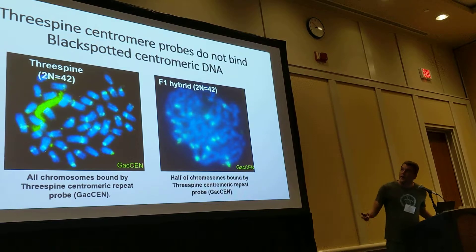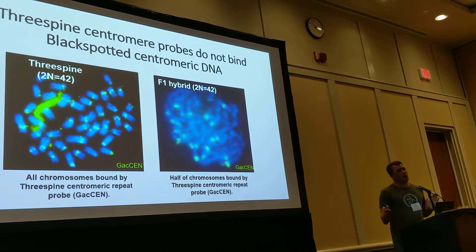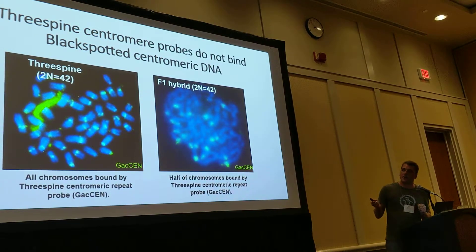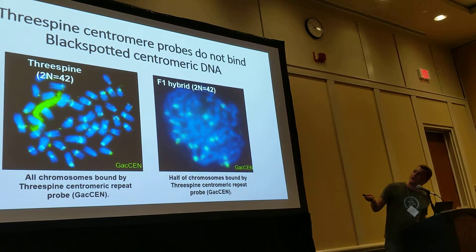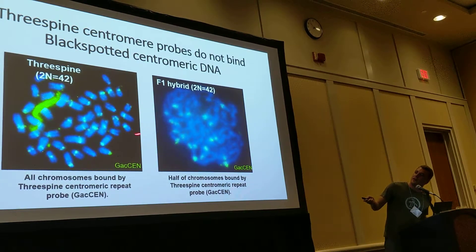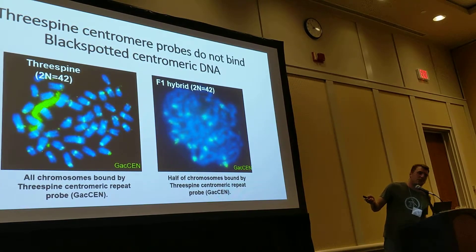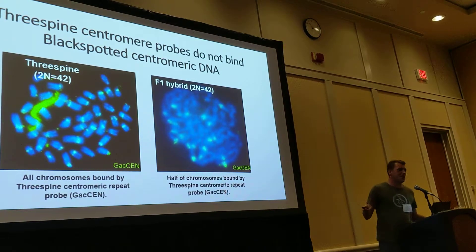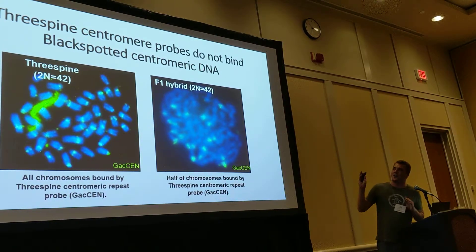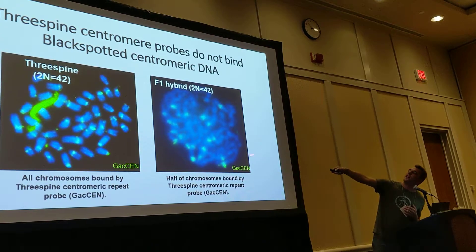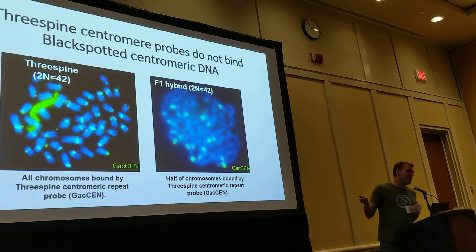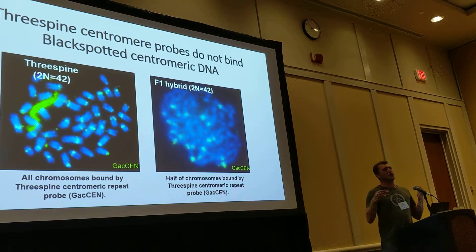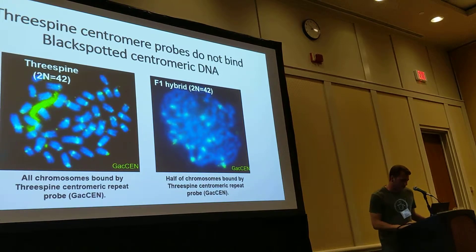If you look at the centromere sequence: this is a metaphase spread of three-spined stickleback where the green dots are where centromere DNA probes are binding — 42 chromosomes, 42 green dots. Over here is an F1 hybrid — there are 42 chromosomes but only 21 green dots. So those probes don't bind the black-spotted chromosomes; they've diverged.